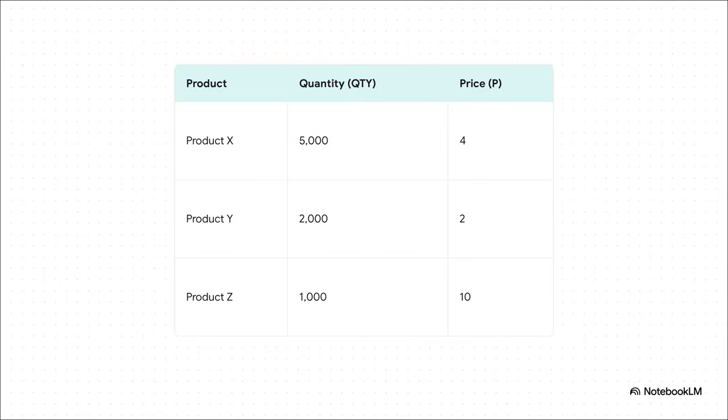This is our economy in the year 2009. We make 5,000 of product X, and they each sell for four bucks. We make 2,000 of product Y, which go for two bucks each. And we've got a fancy product Z. We only make 1,000 of those, but they sell for 10 bucks a piece. And that's the key. For everything we make, we know how much we made and what it sells for.